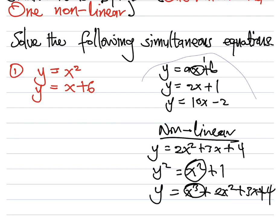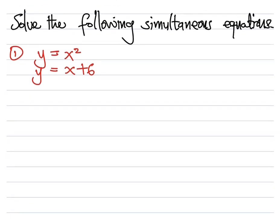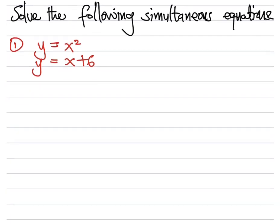So that is what we will be doing today. Let's start with the first question. We have y = x² and y = x + 6. Since y is repeating, it is easier for us to just equate the equations. So we can start with x² = x + 6.